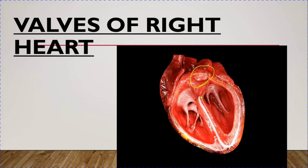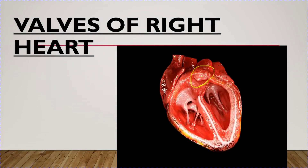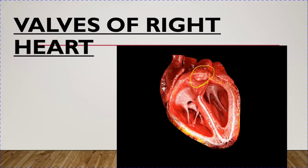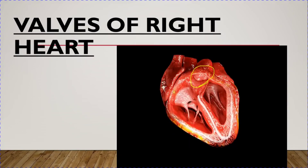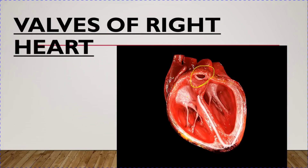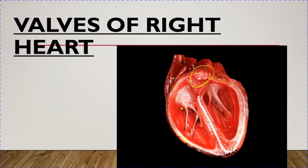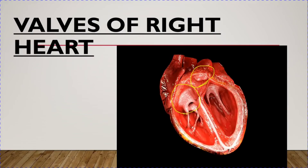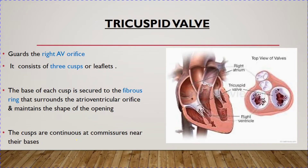You can see here that this is the pulmonary valve — it is the outflow tract of the right ventricle, and it is guarded by the pulmonary valve. The atrioventricular orifice, the opening present between the right atrium and the right ventricle, is guarded by the tricuspid valve. First, we are going to discuss the tricuspid valve, which guards the right atrioventricular orifice.